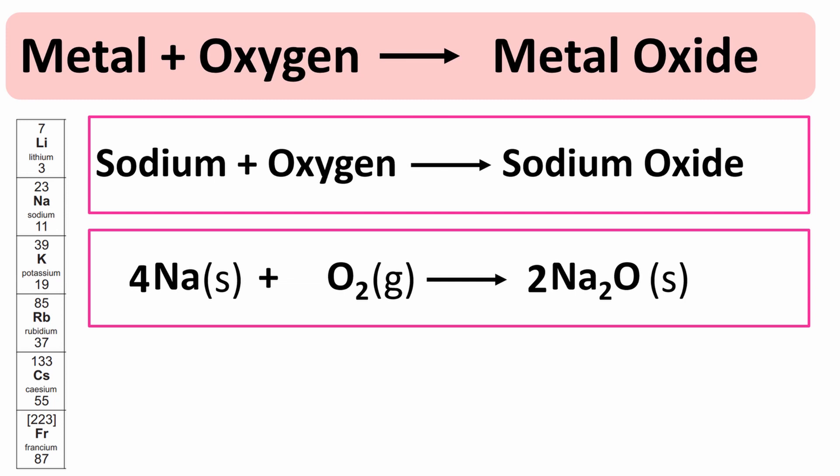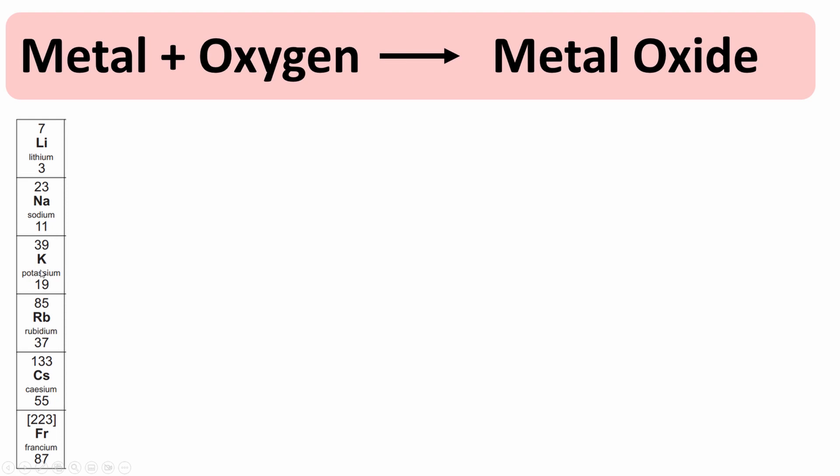The next one going down is potassium. Potassium is even more reactive because it tarnishes the fastest compared to the other two. It tarnishes so quickly that it's hard to see the shiny metal when it's cut because straight away it becomes dull because of the oxide layer that's formed.